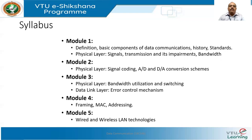In module three, we will also start with the data link layer and discuss error control mechanisms. In module four, the data link layer will be continued and we are going to discuss framing, medium access control (MAC), and addressing at the data link layer. In module five, we are going to discuss wired and wireless LAN technologies.